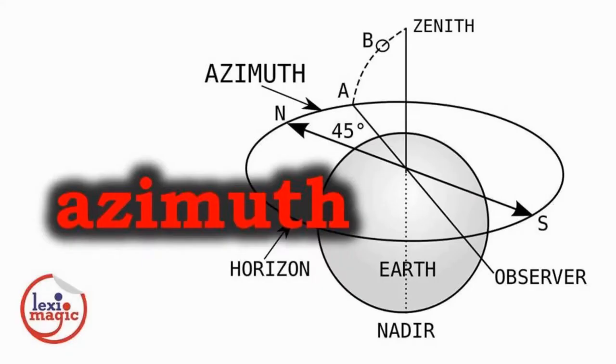Azimuth is the direction of a celestial object from the observer, expressed as an angular distance from the north or south point of the horizon.